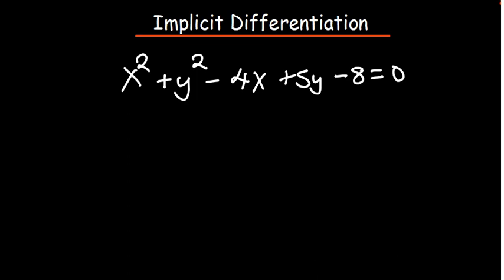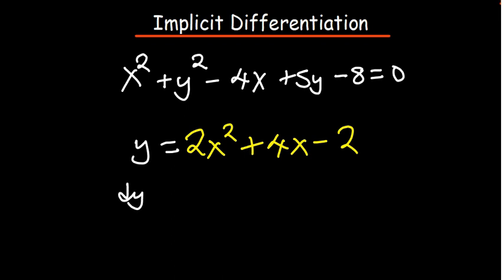If you've been given y equals 2x squared plus 4x minus 2, and they ask you to differentiate this in respect to x, all you're doing is you're assuming y is a subject. If y becomes a subject, then we are saying you are differentiating in respect to x, dy/dx.